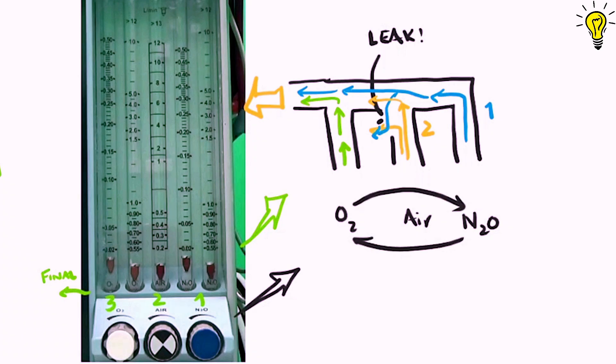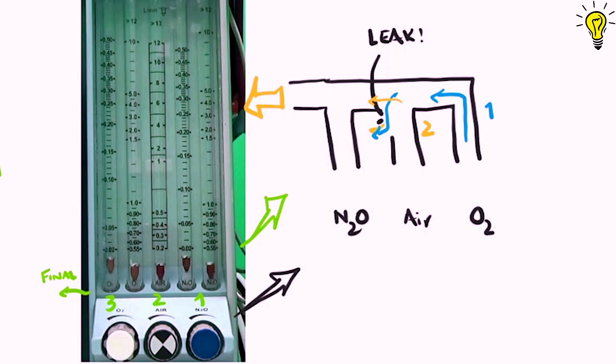Now let's just interchange the nitrous and oxygen positions to get the concept of this. If nitrous is placed downstream, it will go out into the final mixture as intended. But oxygen will be wasted through the leak or breakage now. So the final mixture will be hypoxic and deadly for the patient.